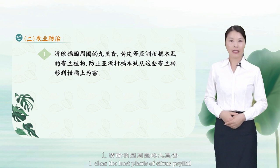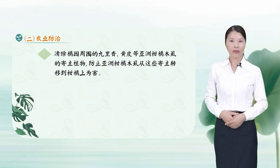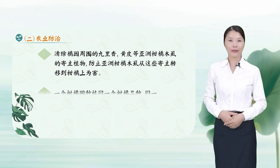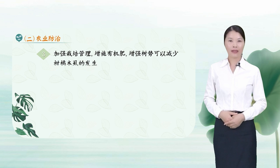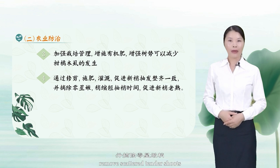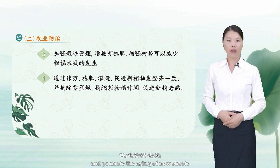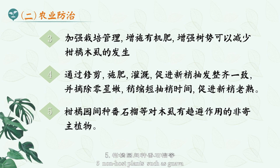Two: Agricultural control. First, clear host plants of citrus psyllid such as Murraya and wampee around the orange orchard to prevent psyllid from transferring from these hosts to citrus. Second, avoid inconsistency of shoot timing caused by mixed planting of multiple varieties and different tree ages. Third, strengthen cultivation management and increase application of organic fertilizer. Fourth, promote uniformity of new shoots, remove scattered tender shoots, shorten the shoot period, and promote aging of new shoots. Fifth, plant non-host plants such as guava, which can repel psyllid, in the citrus orchard.